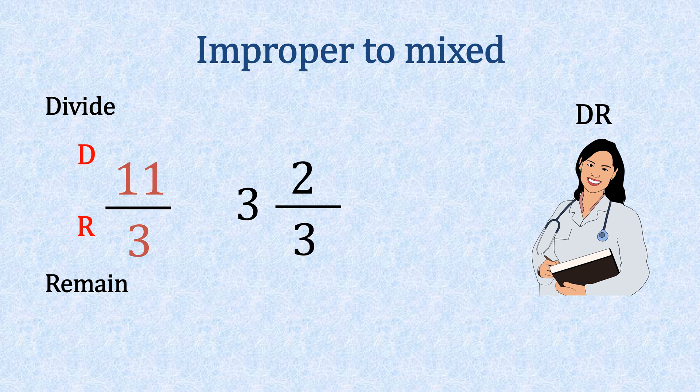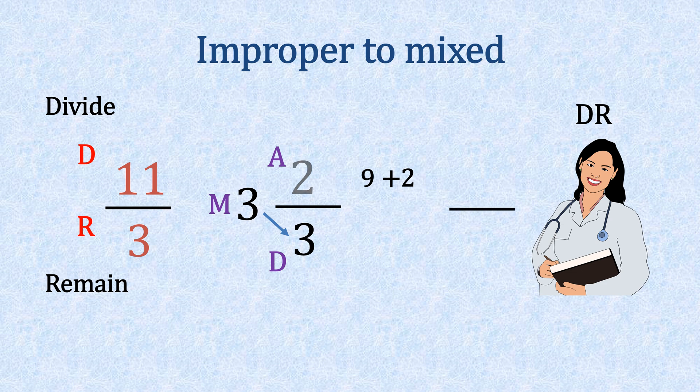Let's see if our MAD formula works here — let's get MAD. Three times three gives us nine. Then we're going to add the numerator to the top: nine plus two is 11. And the three remains on the bottom, giving us 11 thirds.